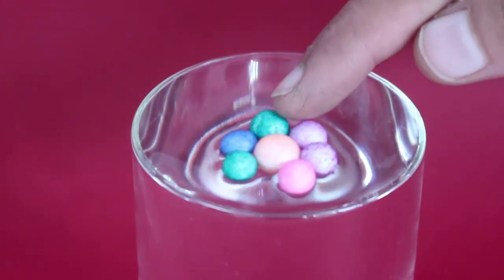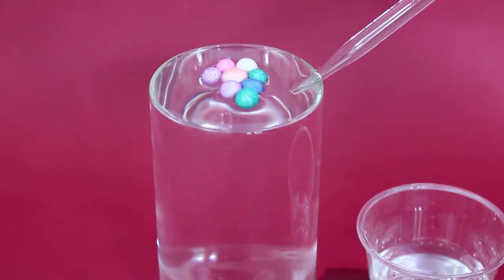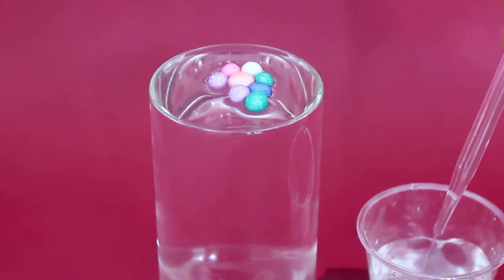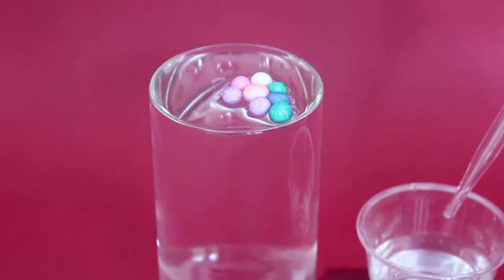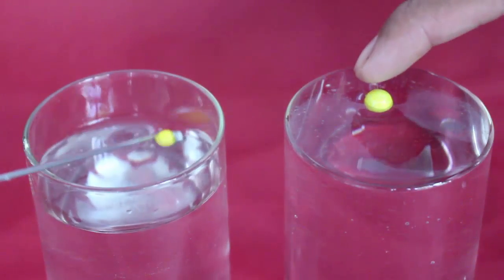However, when we remove the water from the filled glass, these balls move towards the edge. Here we can see this together. Balls in the full glass move towards the center and half filled glass move towards the edge.